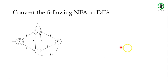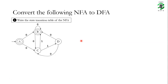This is the NFA that we are given and we are asked to convert it to its equivalent DFA. Let's start the conversion process. In step 1 we will write the state transition table of the NFA.